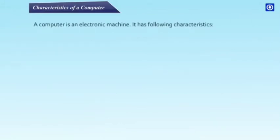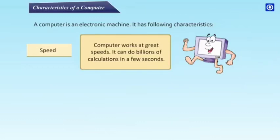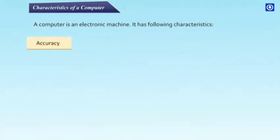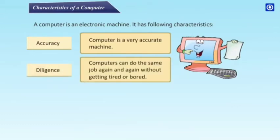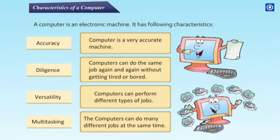Characteristics of a Computer: A computer is an electronic machine with several key characteristics. Speed — a computer works at great speeds and can do billions of calculations in a few seconds. Memory — computers can store a large amount of data safely for future use. Accuracy — computers are very accurate machines. Diligence — computers can do the same job again and again without getting tired or bored. Versatility — computers can perform different types of jobs. Multitasking — computers can do many different jobs at the same time.